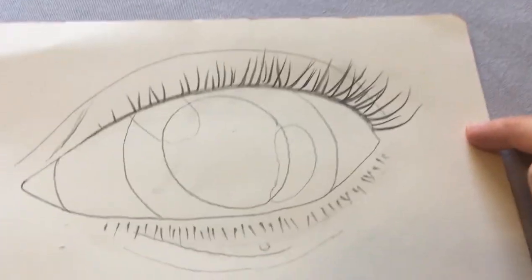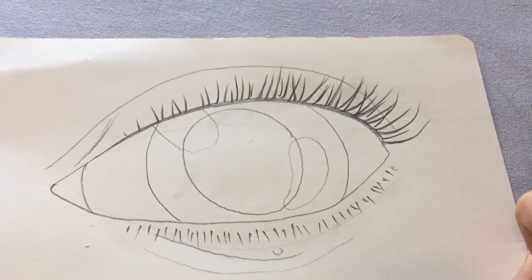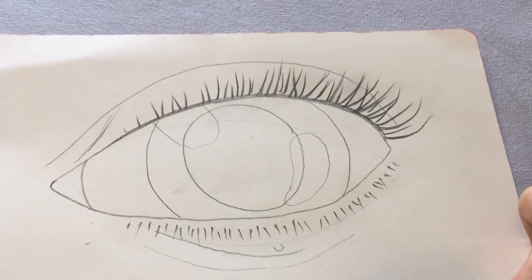So you should have your sketch of your eye finished and ready to shade. This is the really important bit that's going to get it to look really realistic.